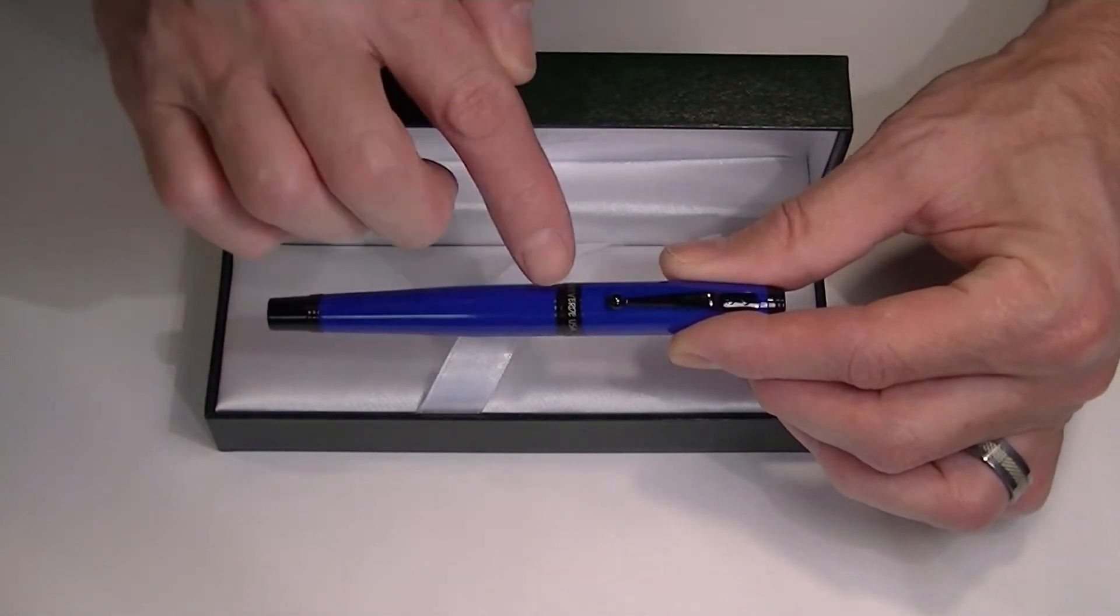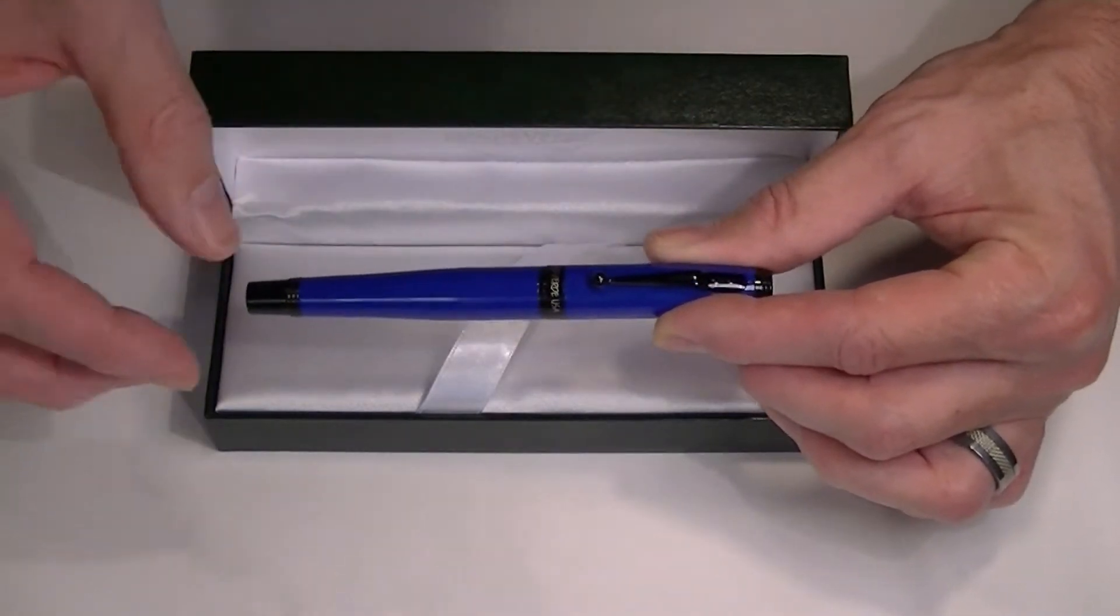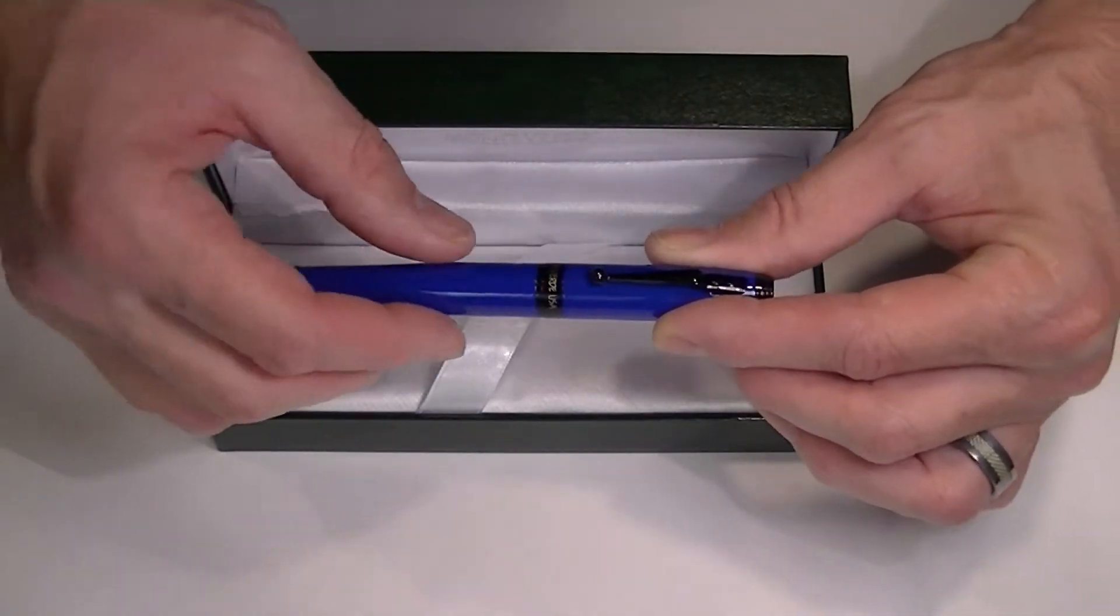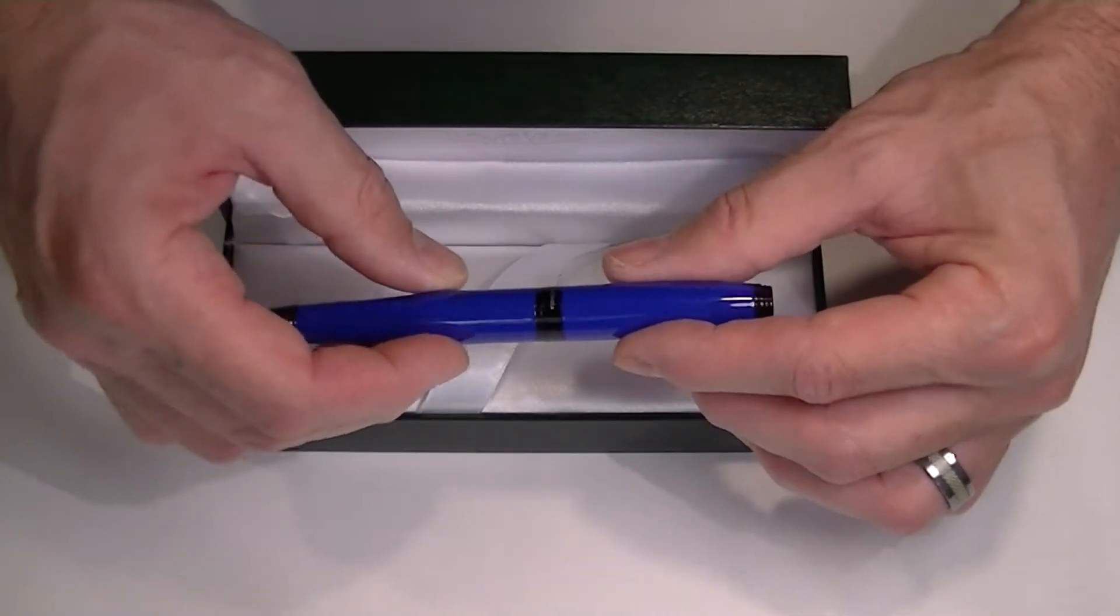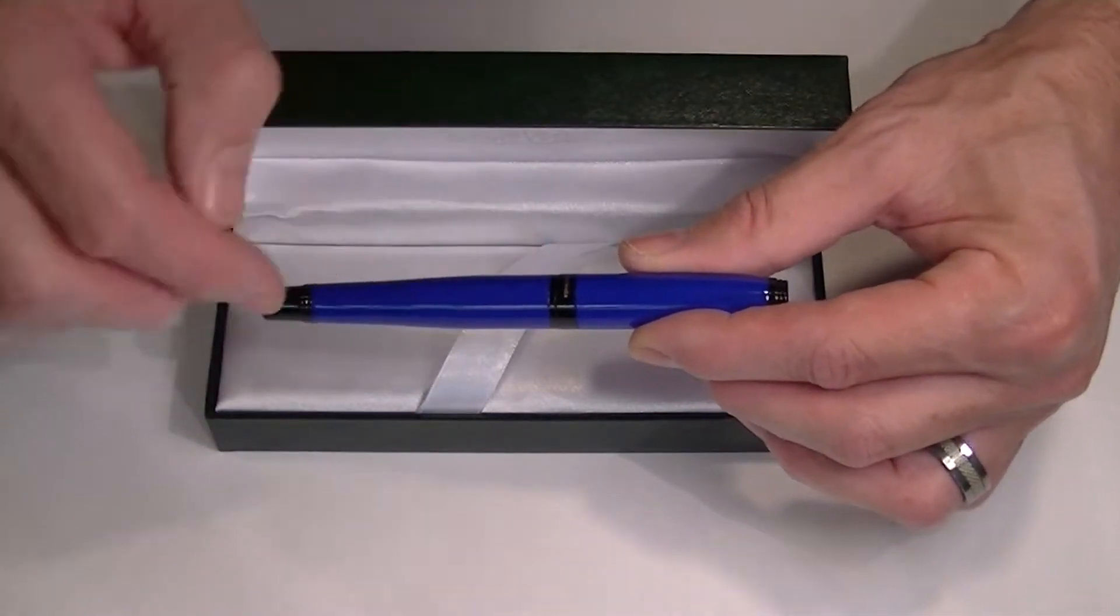The pen comes with black accents along the pen with a black clip. Here on the ring we have printed Mone Verde USA and on the back side is Invincia.